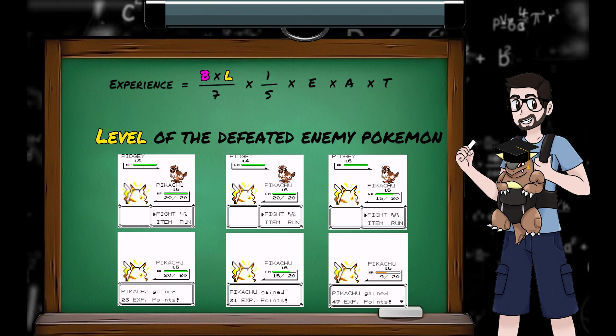L is the level of the enemy Pokemon, a nice easy one. Defeating a level 6 Pidgey takes more effort than defeating a level 3 Pidgey, so you are rewarded with more experience points.